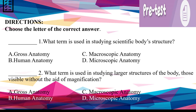Let's have a pre-test. Directions: Choose the letter of the correct answer. You have 5 seconds to answer each number. Number 1: What term is used in studying scientific body's structure? A. Gross anatomy. B. Human anatomy. C. Macroscopic anatomy. D. Microscopic anatomy.